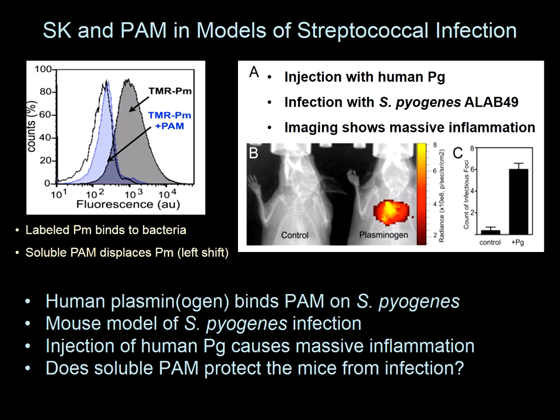Mice are quite resistant to bacterial infection because their plasminogen is not activated by streptokinase at all, and their plasminogen doesn't bind PAM very well. To create a mouse model, people add human plasminogen. We gave mice tail vein injections leading to a plasma level of just short of 2 micromolar — the human level. In those conditions, addition of the ALAB Strep pyogenes caused massive inflammation and fatality.